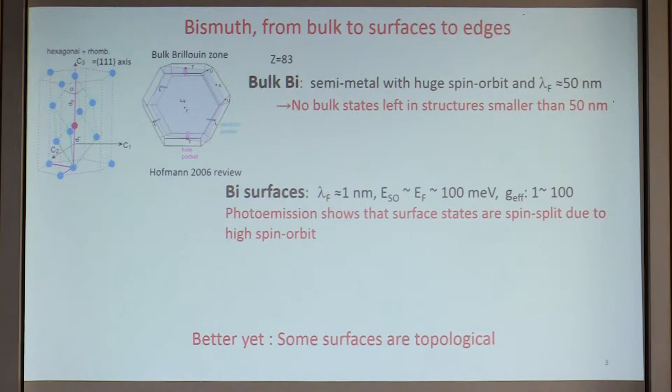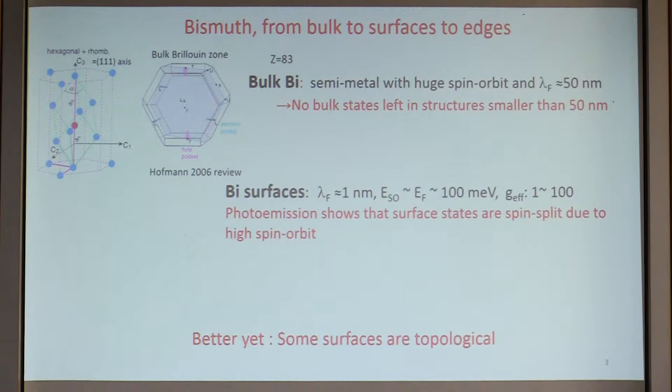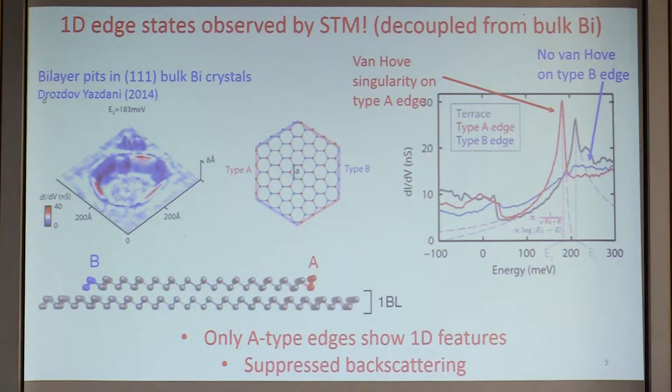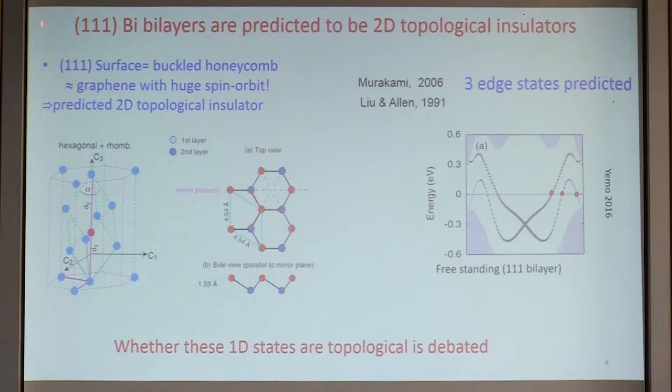If you make a small structure, you get mostly surfaces. The surfaces have a Fermi wavelength of roughly 1 nanometer, very high spin-orbit scattering of the order of the Fermi energy — actually 100 millivolts — and a high g-factor. Photoemission shows that these surface states are spin-split due to high spin-orbit. Even better than this high spin-orbit and high g-factor, there are some surfaces that are topological — the 111 surfaces, meaning the surface perpendicular to the 111 direction.